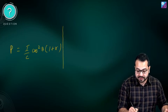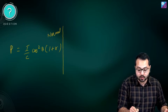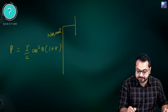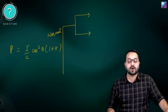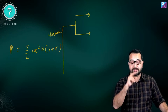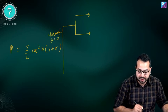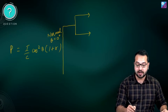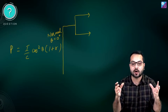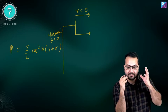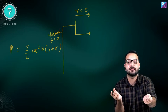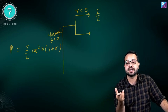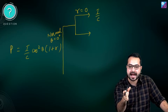Special case number one: normal incidence — light is falling perpendicularly. If light is falling perpendicularly, theta equals zero degrees. The formula reduces to I/C × (1+r). Now, first sub-case: perfectly absorbing surface. If it is perfectly absorbing, r equals zero — no light is reflected. So the radiation pressure becomes simply I/C.